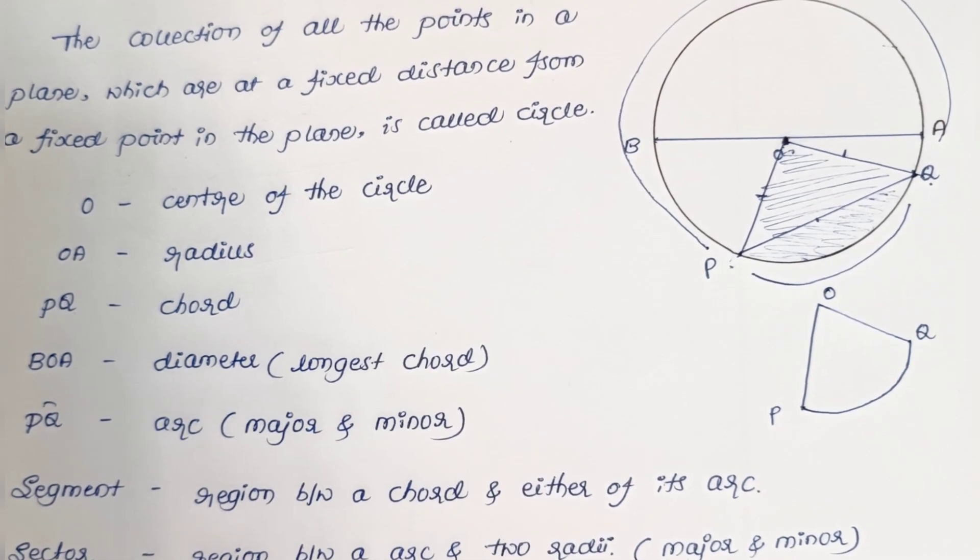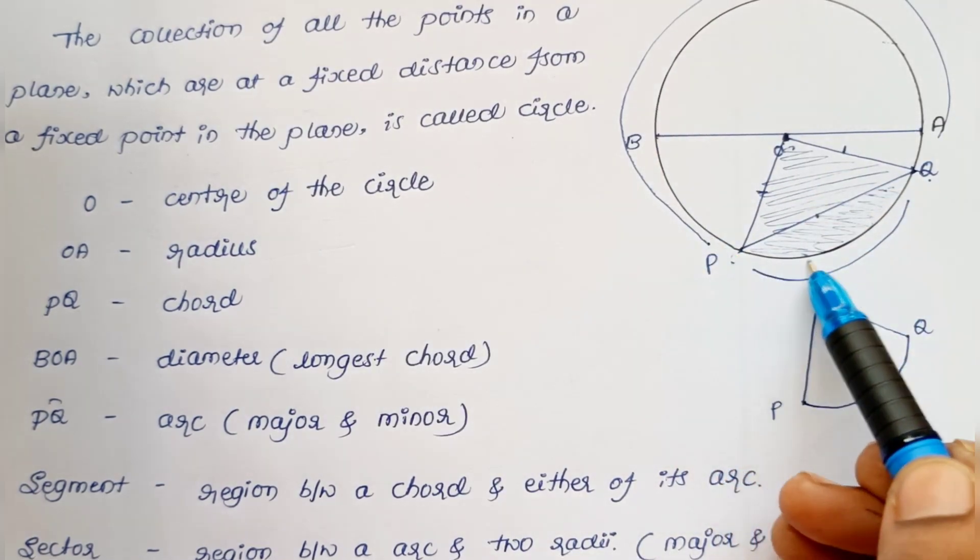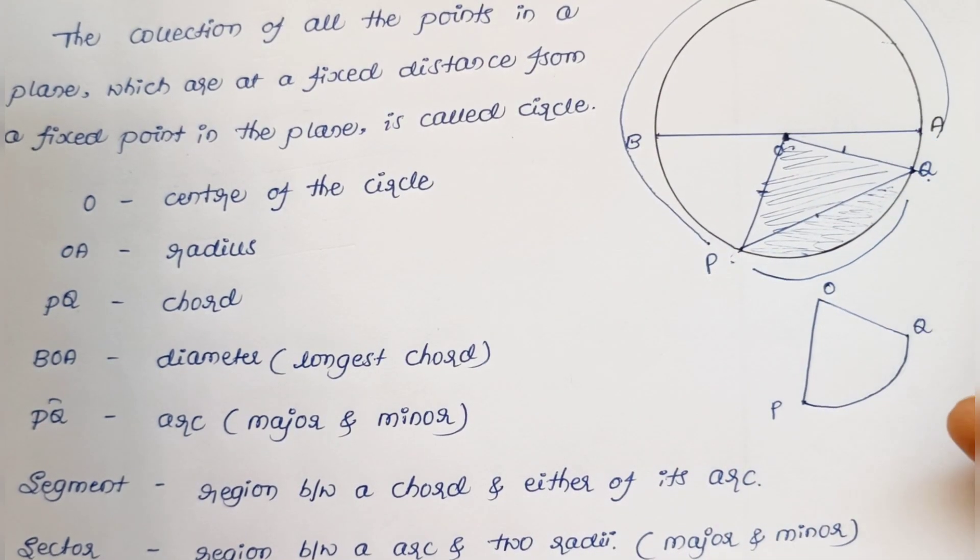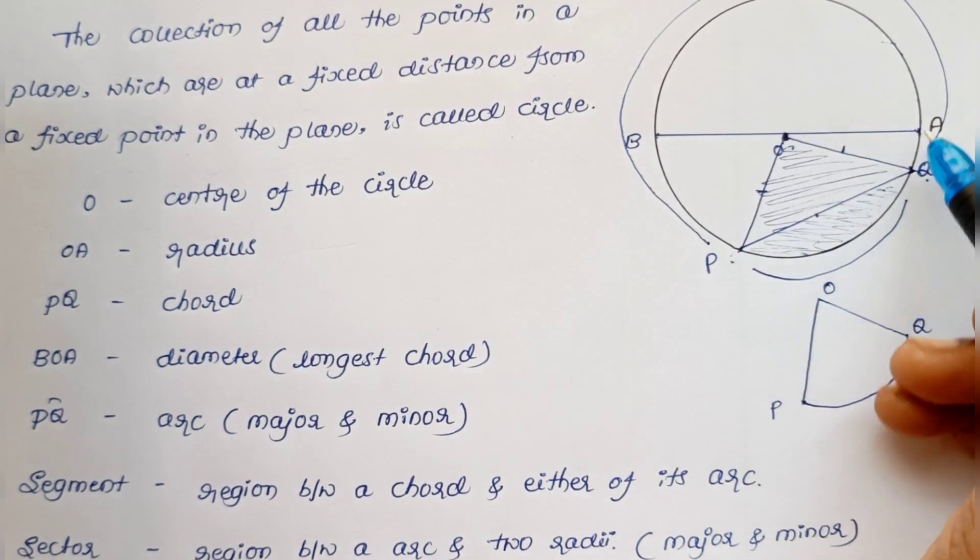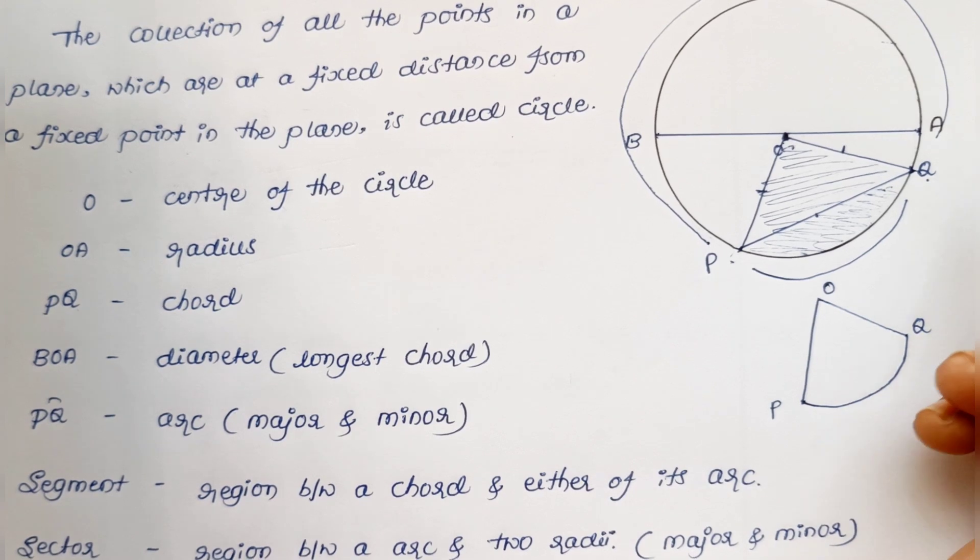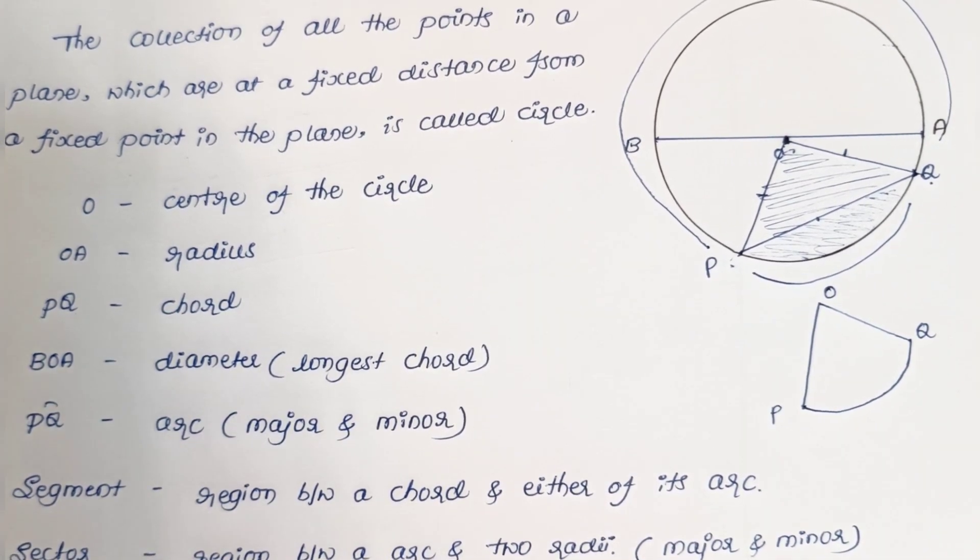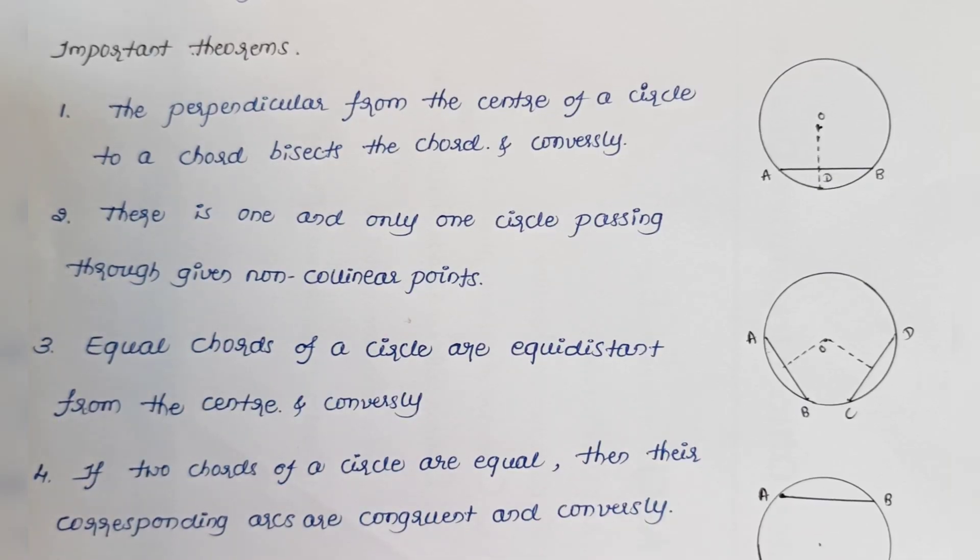And one more is circumference. The total length of this circle is called circumference, or we can say the perimeter of the circle is called the circumference of a circle. These are some important terms of the circle. Next, we will see some important theorems of the circle.